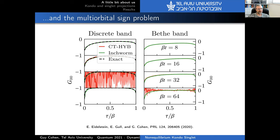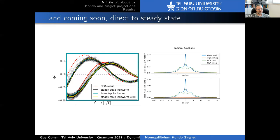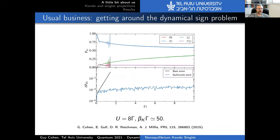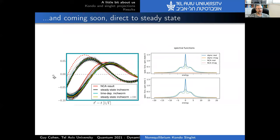In our method we do everything by time propagation, and it's quite expensive to go to long times. Unlike the method in the previous talk, where they can go to very long times quite easily, we have this inchworm process — we do short time intervals and then inch toward longer time intervals — resulting in a computational scaling that is like the square of time. So for non-equilibrium steady states it can be quite expensive.